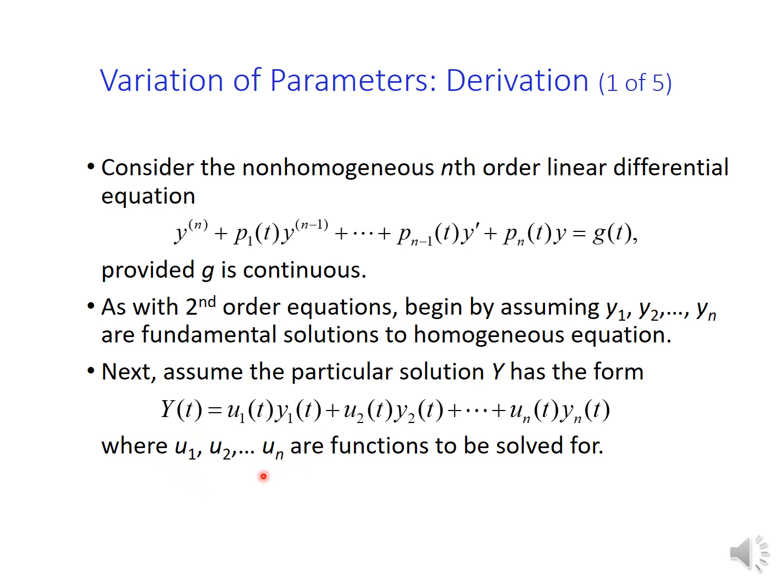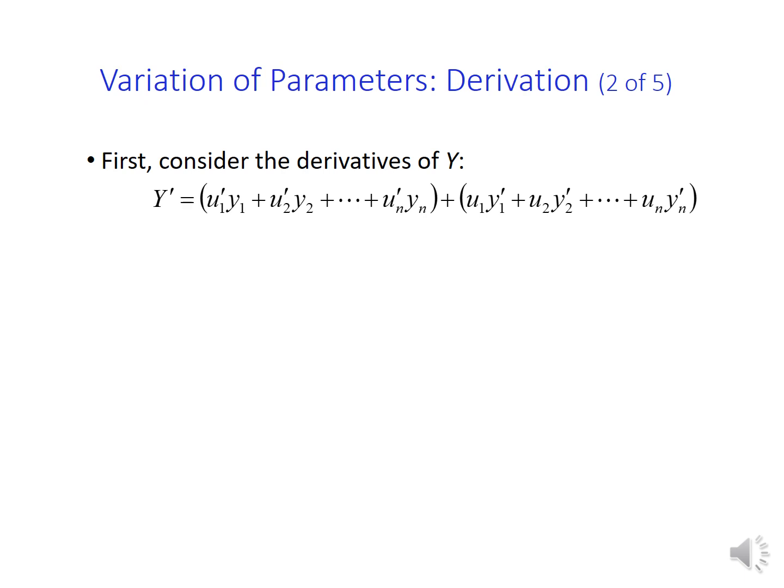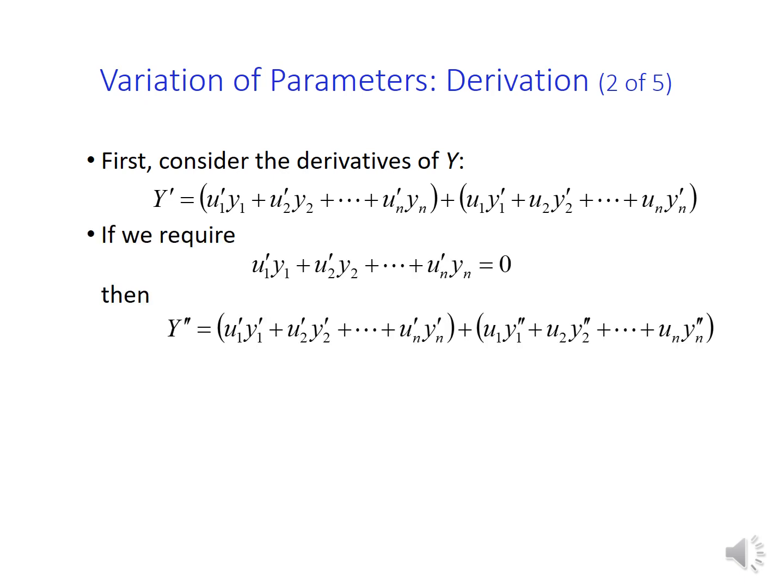And to do it, of course, first we have to find out all orders of derivatives of capital Y, and then we will substitute these derivatives into the nonhomogeneous differential equation. Let's start with the first derivative of capital Y, which can be obtained by applying the product rule for derivatives. Next, we compute the second derivative of capital Y. And in order to simplify the computations, we make an assumption such that the sum that appears on the right-hand side of Y prime is equal to zero.